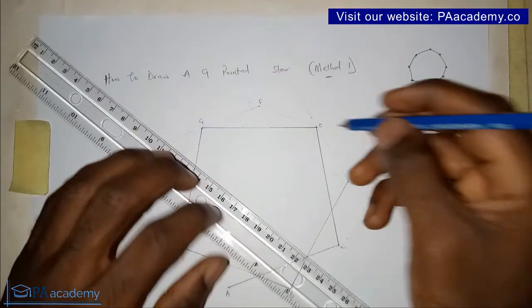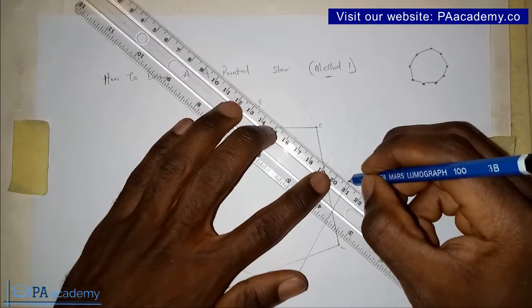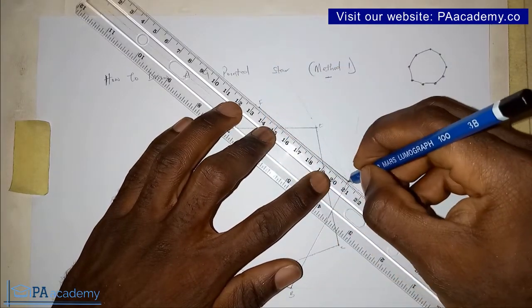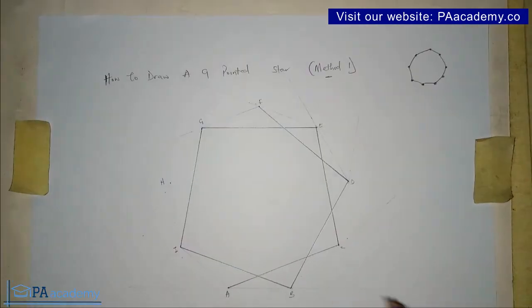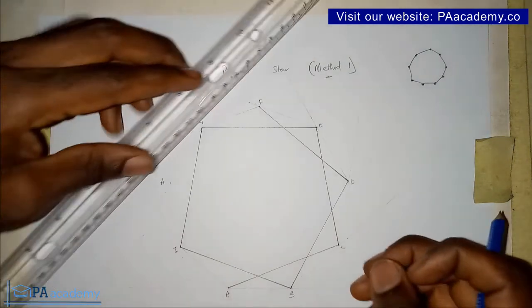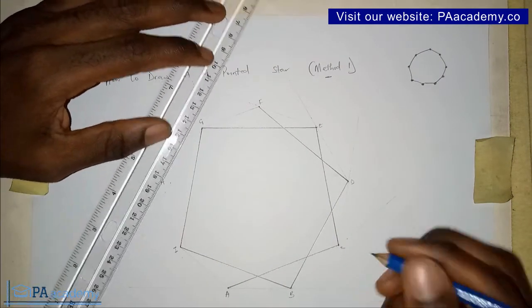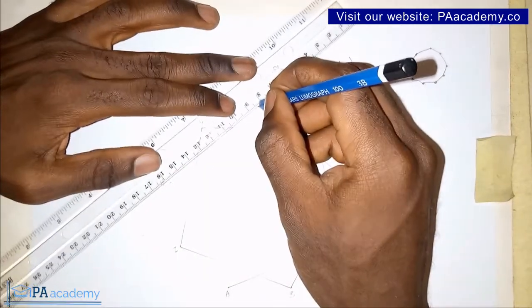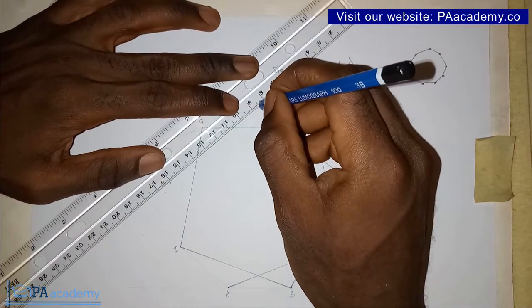From D, you are going to skip E and move to F. If you are finding value in this video, please kindly click on that subscribe button to subscribe to our channel PA Academy. The subscribe button will be at the lower right of your screen.